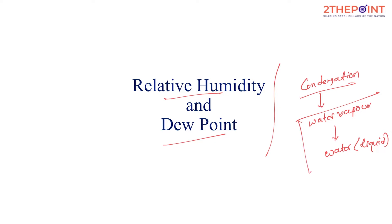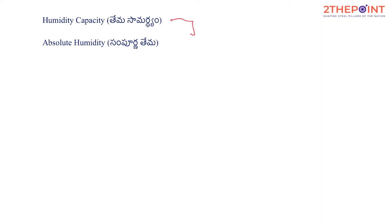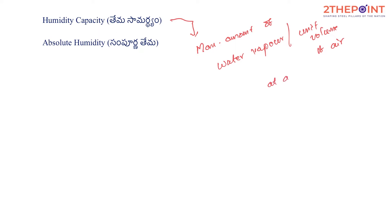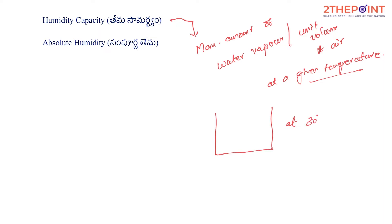First, we will talk about Relative Humidity and Condensation. Humidity Capacity is the maximum amount of water vapor that a given unit volume of air could hold at a given temperature. A unit volume of air is a cubic meter of air. Let's say this unit volume of air is at 30 degrees — the maximum water vapor it could hold is what we call Humidity Capacity.